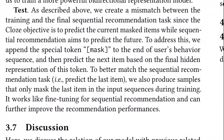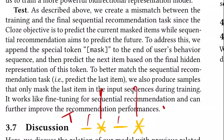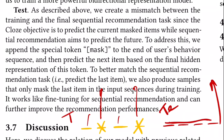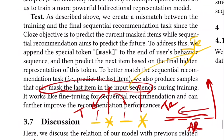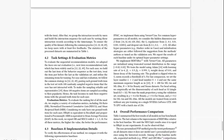There's a train-test mismatch: during training the model masks random interactions and predicts them using both left and right context, but during testing you want to predict the next item autoregressively. To bridge this, the authors specifically create examples where only the last item of the input sequence is masked, mimicking the testing scenario so the model is exposed to that setting during training.